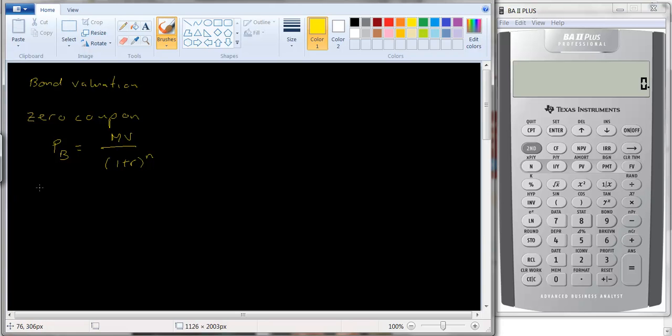So let's say for example, the maturity value is $1,000, and the interest rate is 8%, and let's say that the bond matures in 15 years. Well, then the price of the bond is just the present value of the $1,000. It's just a lump sum present value, 1,000 divided by 1.08 raised to the 15th power. And we can work that out.